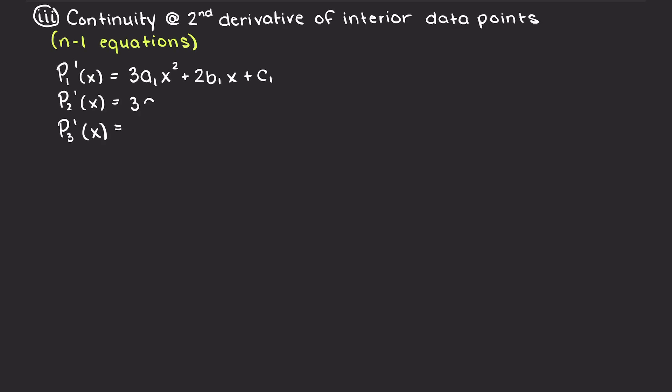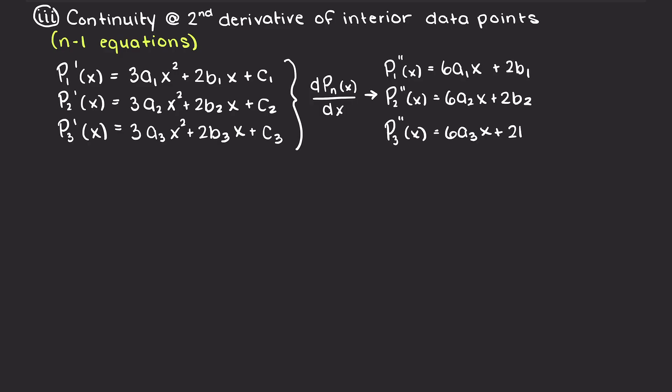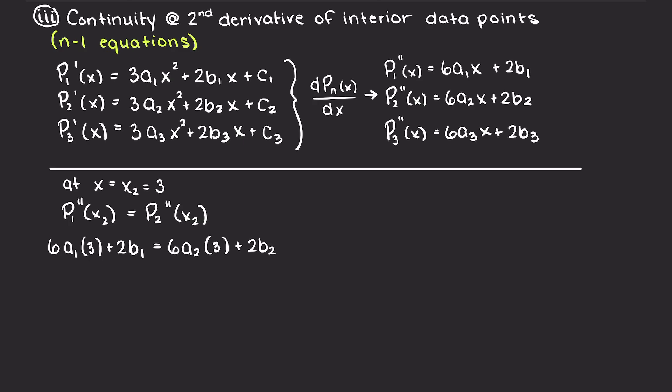Again, like we just previously did, we can do the same thing with second derivatives as we know we have continuity there as well. And this will also give us n-1 equations. To get the first equation here, we are going to take the derivative of our previously calculated first derivative of P1 and P2. Then, we are going to equate them and plug in our x value where the continuity is occurring, which is x equals 3. This works out to the following equation, and I am just going to rearrange it, such that all variables are on one side and the constant on the other side.